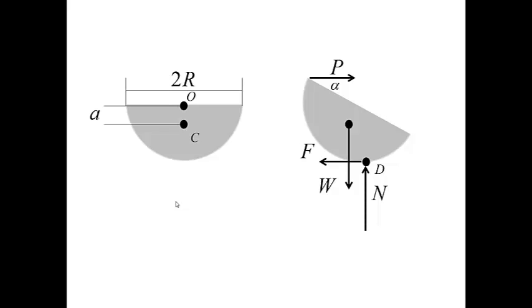So, the free body diagram involves two pairs of forces. The horizontal forces P and F must balance each other and therefore they must be equal. And the vertical forces N and W must be equal.